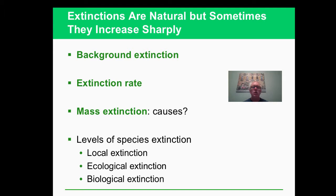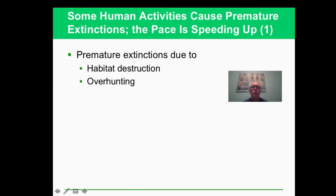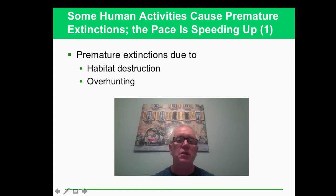We are causing premature extinctions. We can go back to HIPCO to talk about these things again. Habitat destruction and overhunting are some of the reasons we've done that. Overhunting would be the example for the passenger pigeon.